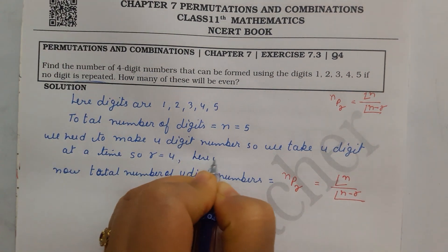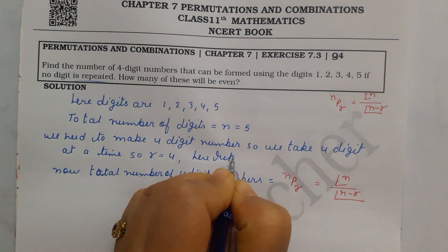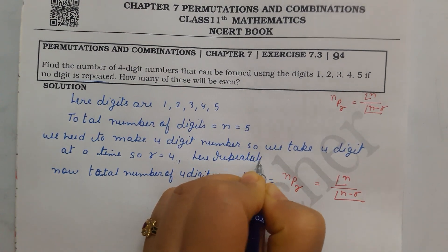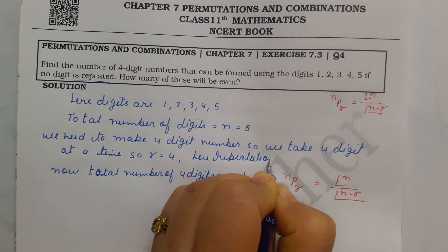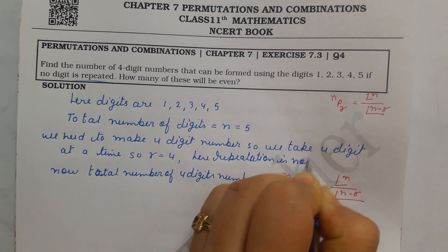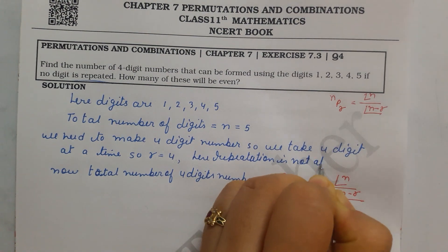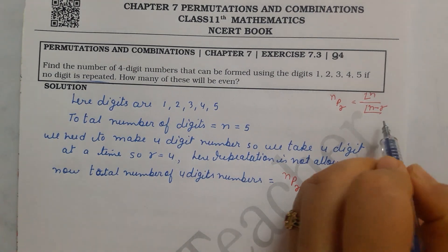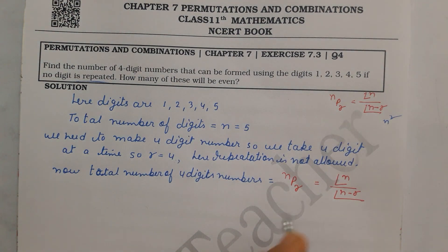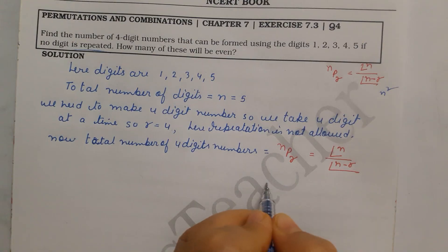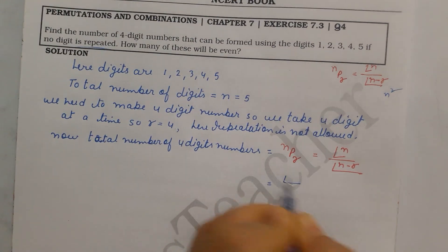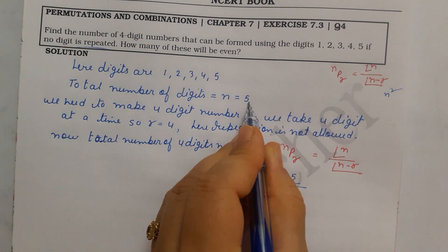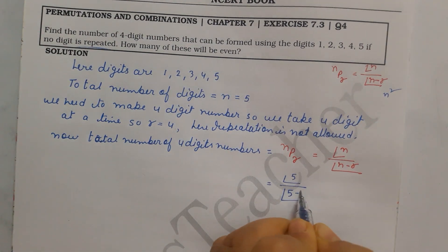Repetition is not allowed here, so we use the nPr formula. If repetition were allowed, we would use the n power r formula instead. Now we put in the values: n is 5, so we write factorial 5; n minus r is 5 minus 4, which gives factorial 1 in the denominator.